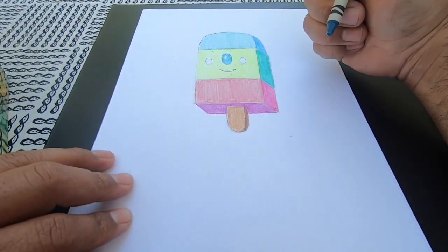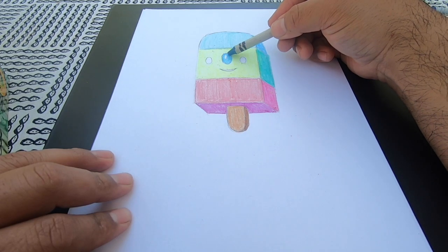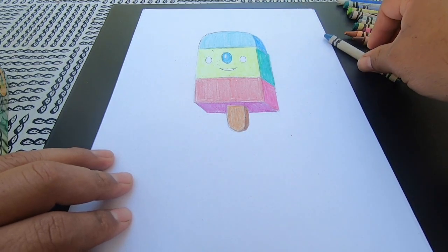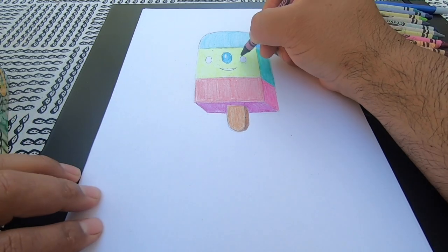When I color in the eyes and the nose I want to leave a white highlight. I do this by leaving an empty space on the paper that represents a bright tone in the drawing.